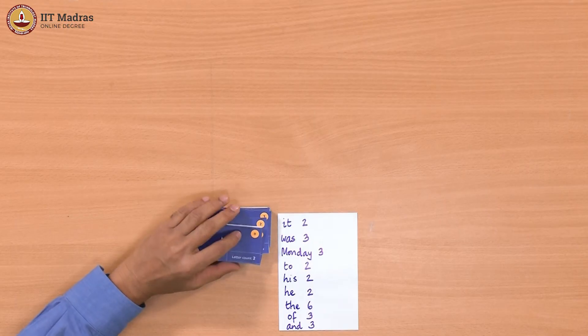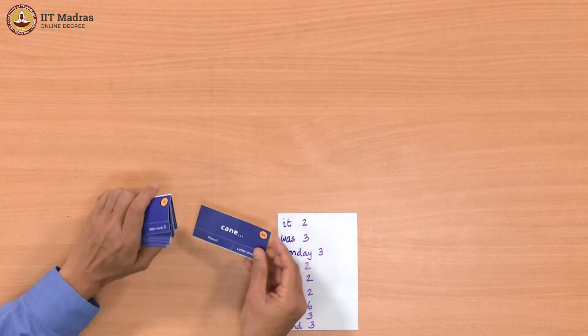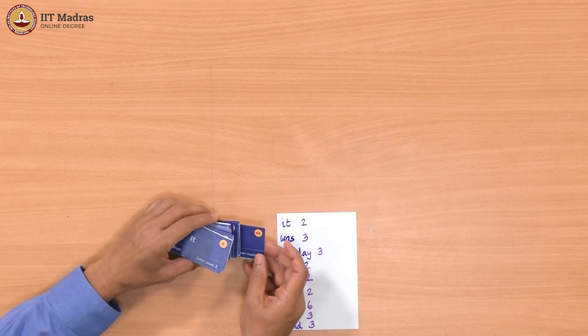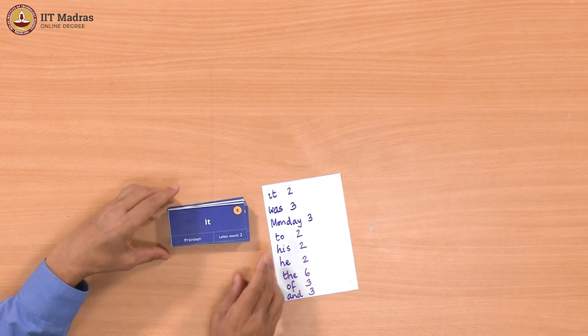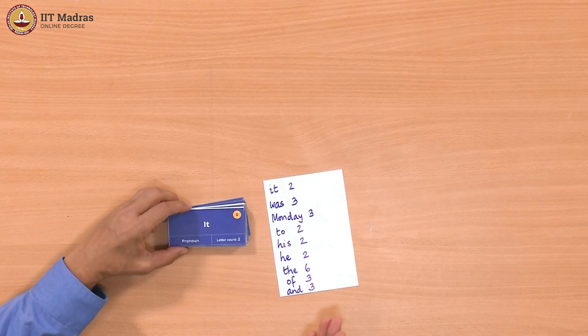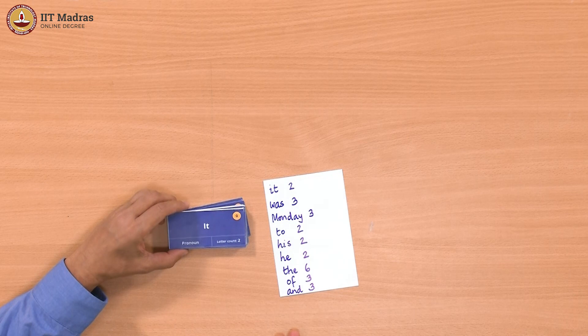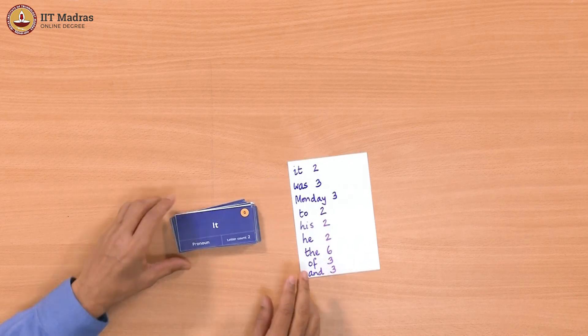You have to find the average word length. Actually the word length is there - each word we know the length because letter count is there. So we can take that and find the average. Meaning we have to add up the letter counts and divide by the total number of words. Total number of words, cards we know because they are numbered sequentially, 0 to 64. So there are 65 cards. If we add up all the letters and divide by 65, we should get an estimate of the average word length. Then we know anything smaller than that is a short word, anything bigger than that is a long word.